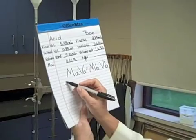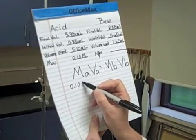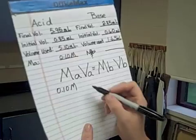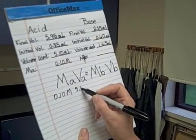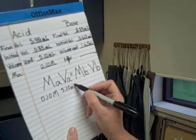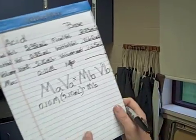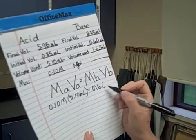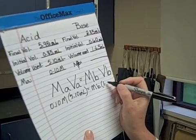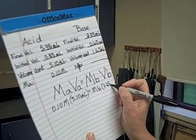I'm going to put in the molarity of the acid, which is 0.10 molar. I'm going to put in the volume of the acid that I used, which is 5.10 milliliters. The molarity of the base is what we are solving for. That will be our x variable. And the volume of the base that we used was 1.65 milliliters.